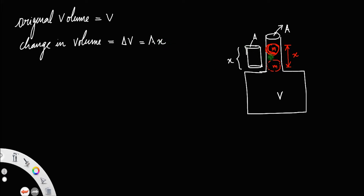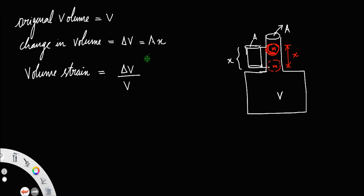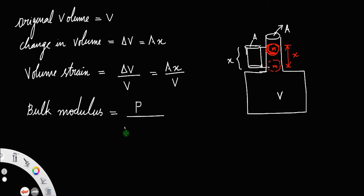I have drawn that separately — the neck portion within this region will also be like a cylinder, so that change in volume is equal to A times x. Then we have volume strain. Volume strain is equal to change in volume divided by the original volume, that is equal to Ax divided by V.